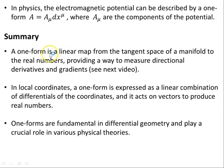To summarize: a one-form is a linear map from the tangent space of a manifold to the real numbers, providing a way to measure directional derivatives and gradients. And that'll be the focus of the next video. In local coordinates, a one-form is expressed as a linear combination of differentials of the coordinates, and it acts on vectors to produce real numbers.